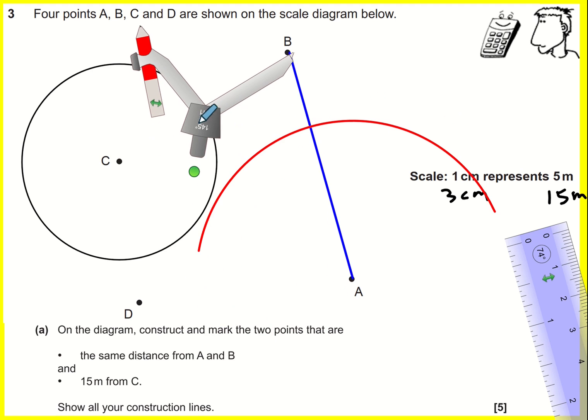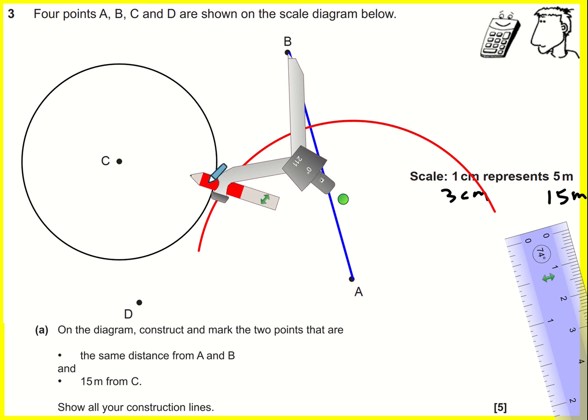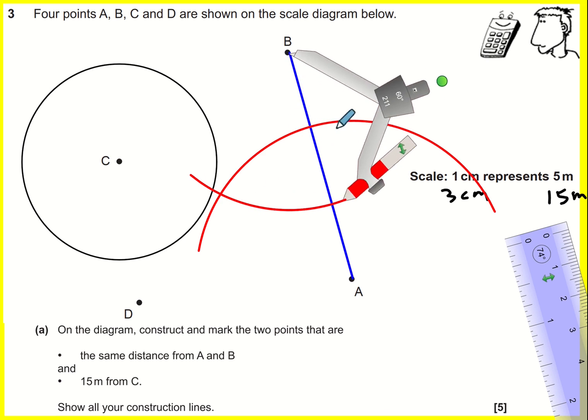If I do the same at B, then I get the points that are this distance away from B as well. There's two places where they coincide, and they're the same distance away from A and B.